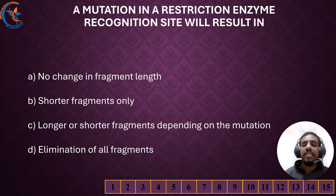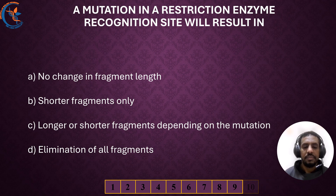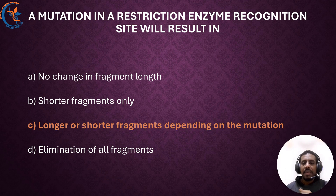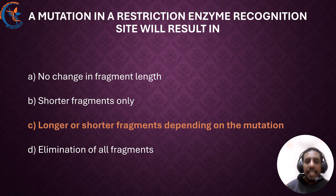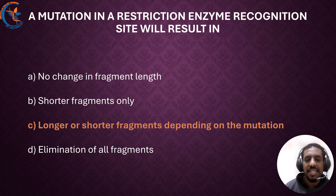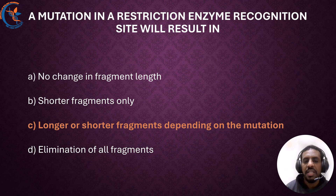A mutation in a restriction enzyme recognition site will result in? The correct answer is longer or shorter fragments depending on the mutation. A mutation can cause loss of a restriction site — meaning the enzyme can no longer cut at that location, resulting in a longer DNA fragment — or creation of a new restriction site, meaning the enzyme cuts at an additional location, leading to a shorter DNA fragment.